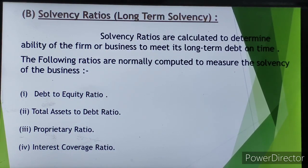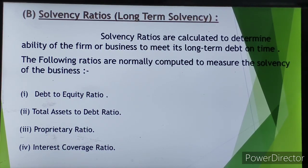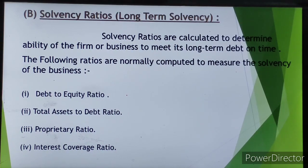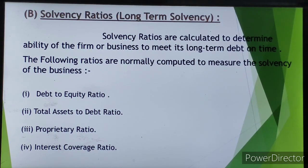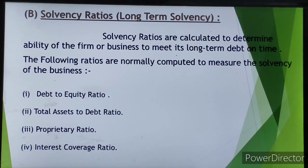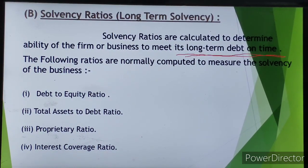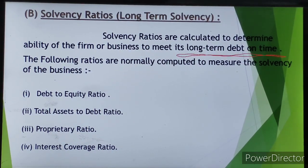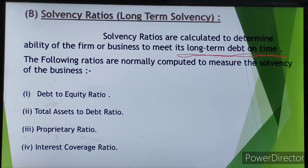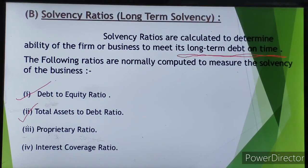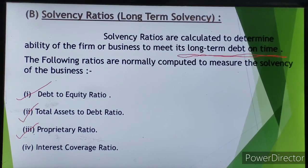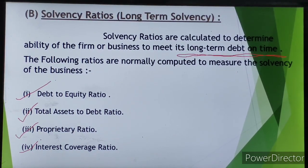In solvency ratio, we check whether the company can pay its long-term liabilities on time. Solvency ratios are calculated to determine the ability of the firm to meet its long-term debt on time. There are four ratios included in solvency ratio: first is debt to equity ratio, second is total assets to debt ratio, third is proprietary ratio, and last is interest coverage ratio.